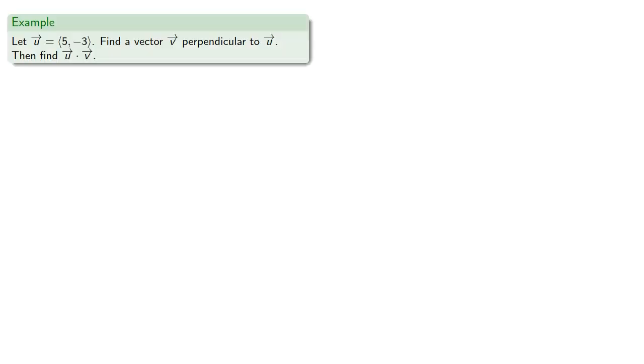Well, let's see if we can find an orthogonal vector. Suppose we have a vector (5, -3). Let's find a vector v perpendicular to u.